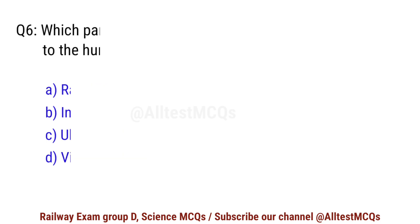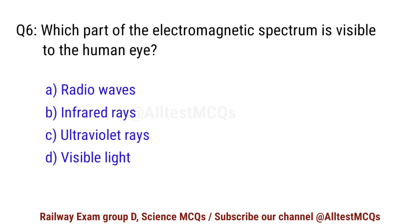Question No. 6. Which part of the electromagnetic spectrum is visible to the human eye? Right option is D. Visible light.